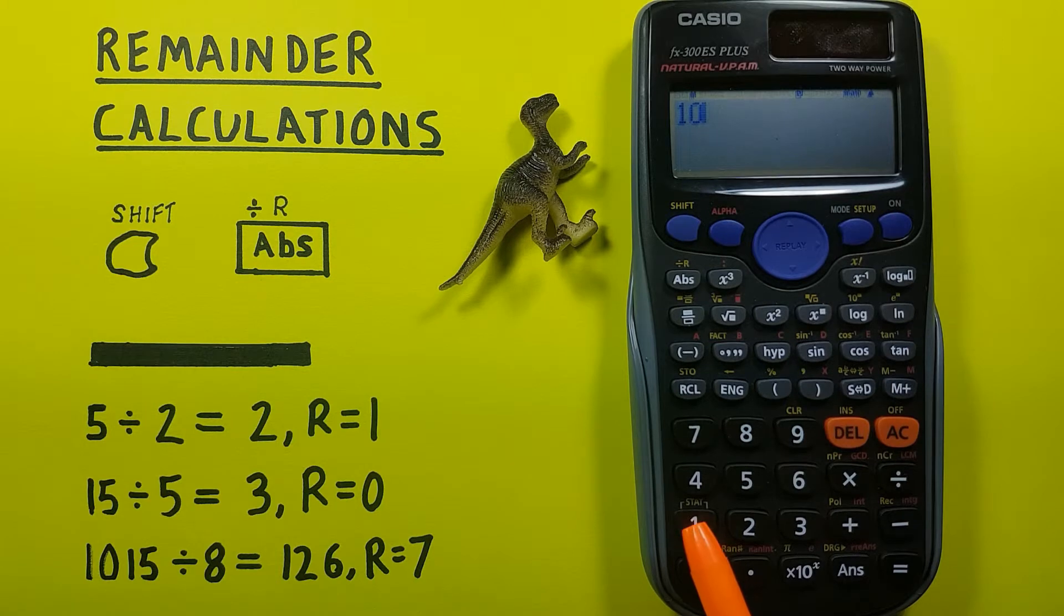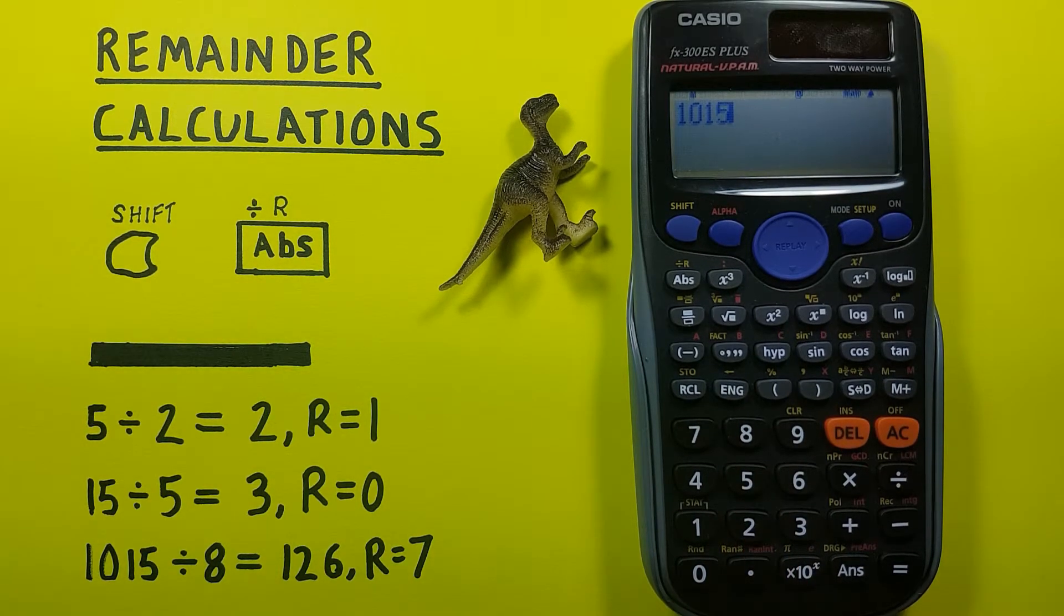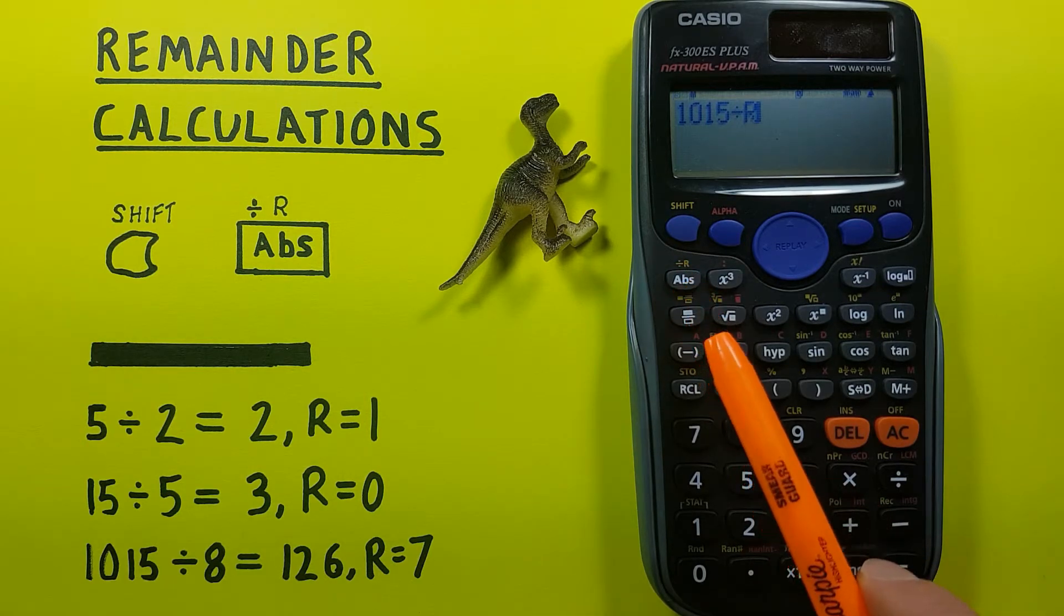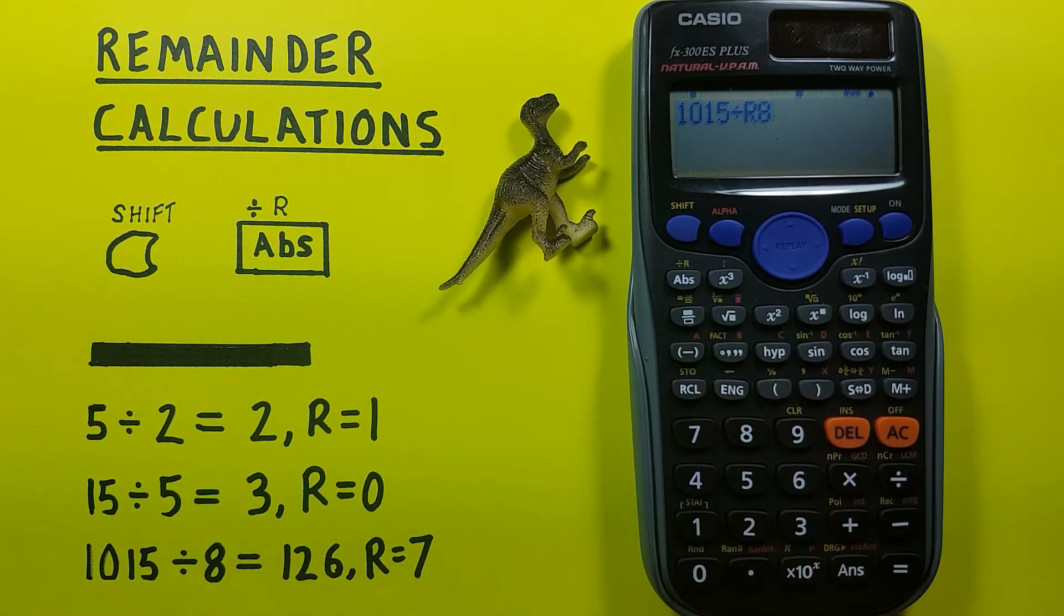First we put 1015 on the screen, again the shift key and then the ABS key and then 8. So you have 1015 divided by R8, press equals and we see we get a quotient of 126 with a remainder of 7.